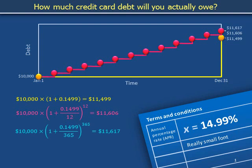If your credit card company increases your debt at the end of each day by a 365th of 14.99%, your initial $10,000 is multiplied 365 times by 1 plus a 365th of 0.1499. This grows to $11,617.